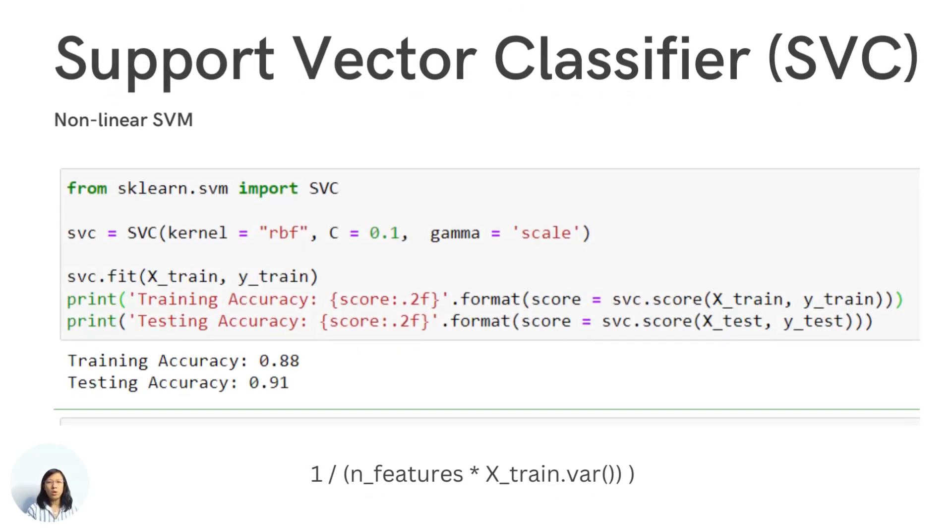By reducing the value of C, it increases the strength of regularization, because C is inversely proportional to the strength of regularization. So in this example, we reduce C to be 0.1, that means we increase the strength of regularization. And then we set gamma value to be 'scale'. Scale is a default value. If you don't set any parameters, gamma will take as scale. But if you set scale, how is the gamma value calculated? Gamma is calculated by 1 divided by number of features times variance of the data. This is how you calculate the gamma value.